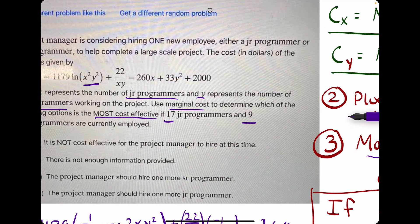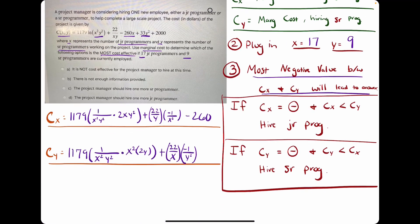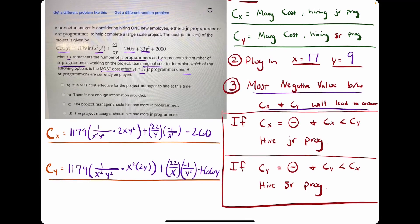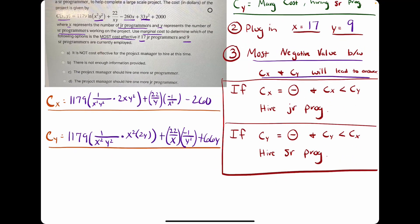The derivative of this x term with respect to y goes to 0, since we're treating x as a constant. The y term, 33y squared, goes to 66y, and then 2,000 goes to 0. So this is our derivative with respect to y.